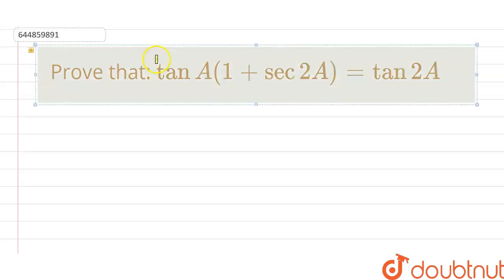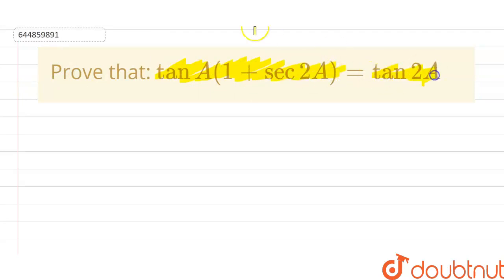Okay so the given question here is prove that tan A (1 plus sec 2A) should be equal to tan 2A. So first of all what I'll do? I'll start solving from the LHS part.